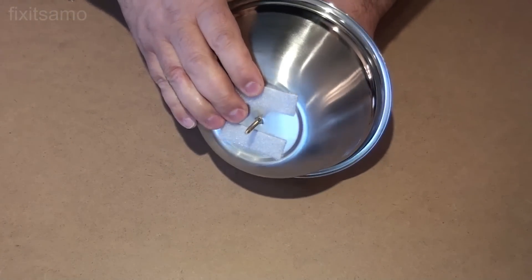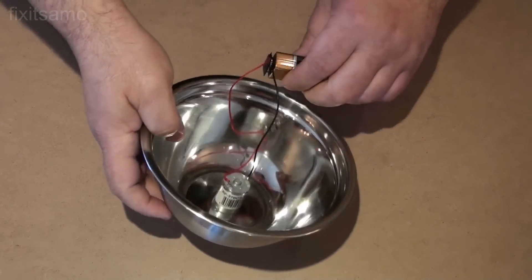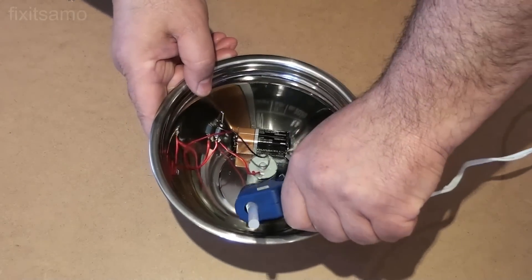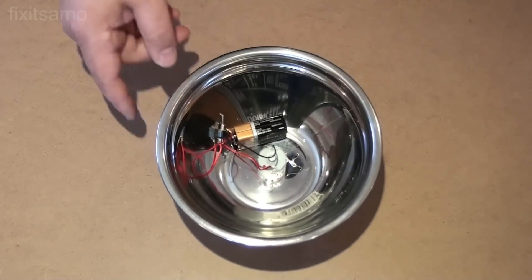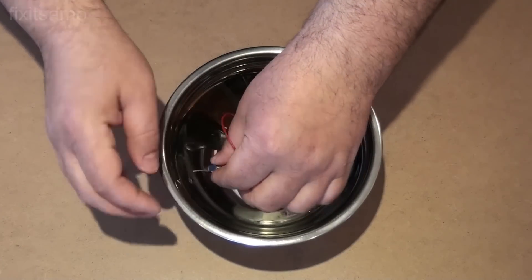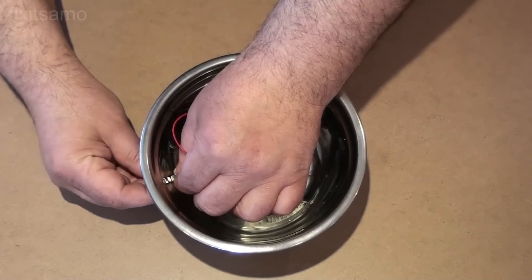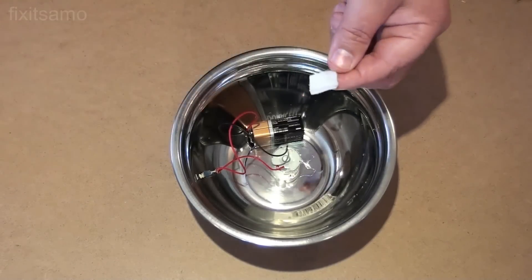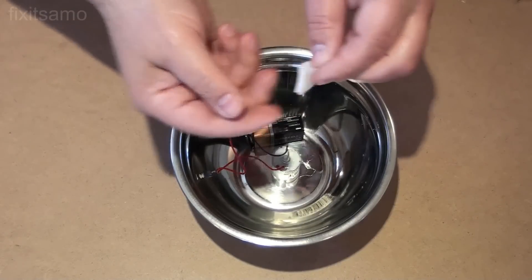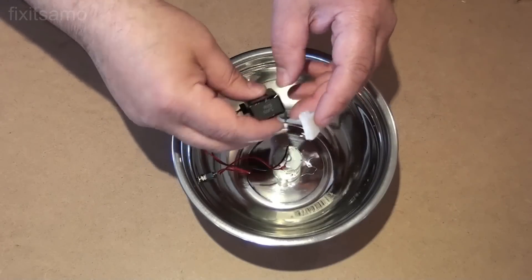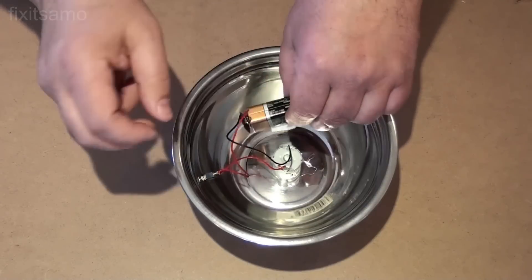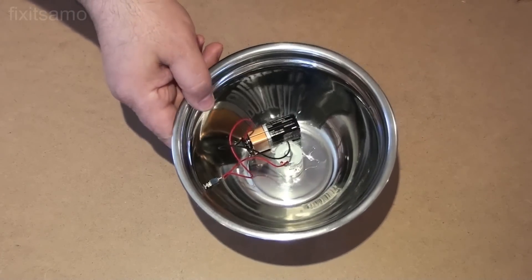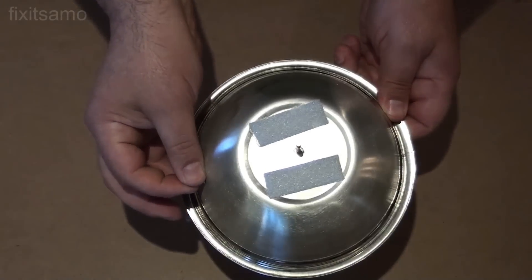We're gonna start by putting the motor like this, then we're gonna secure it properly. Now we're gonna install the switch. There we go. I have a small piece of velcro that sticks on this side and on the other side I'm gonna put the battery like this so I can change the battery anytime I want. Now the switch is working.